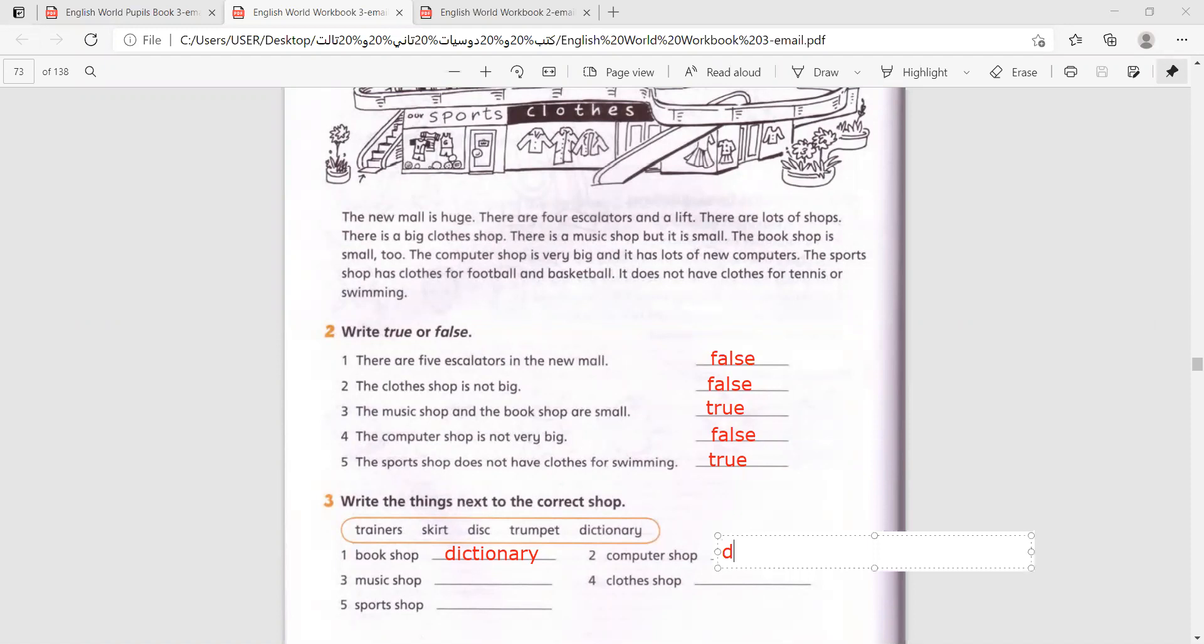Number three, music shop. Trumpet. Number four, clothes shop. Skirt.